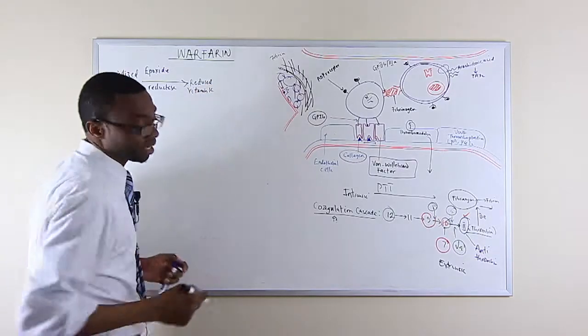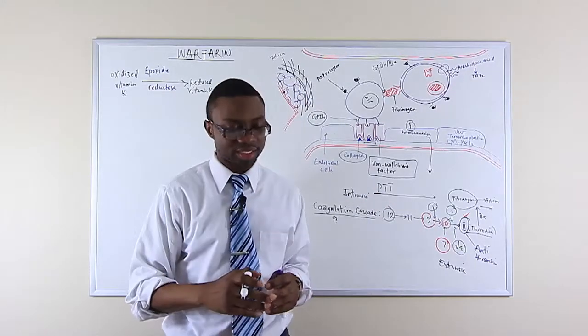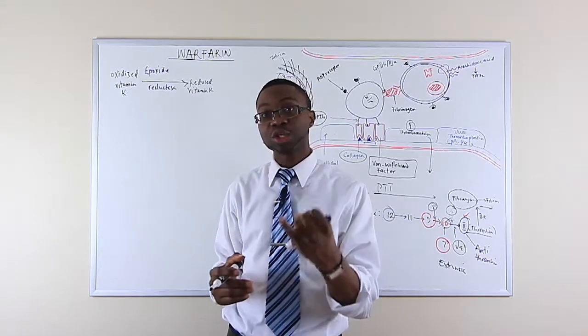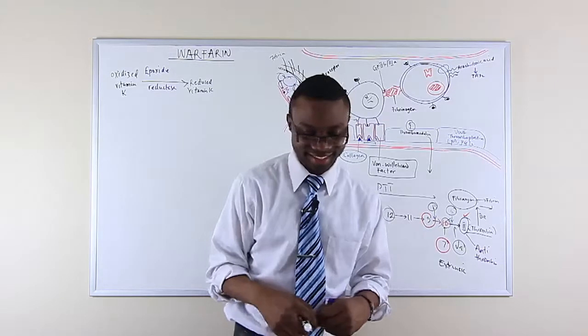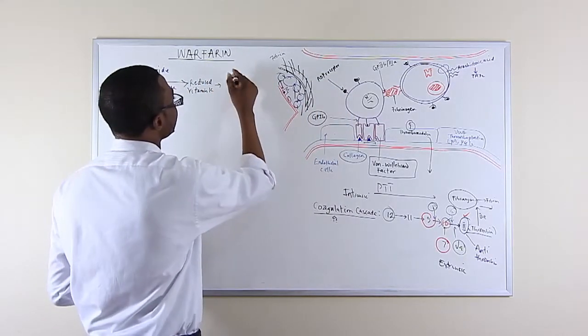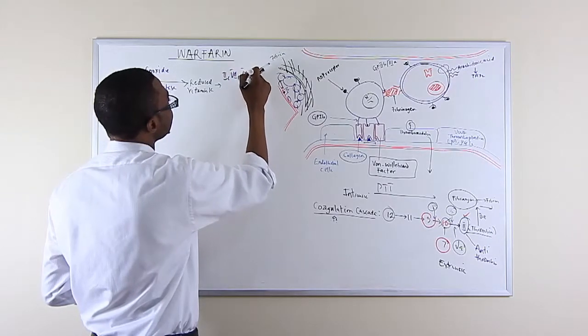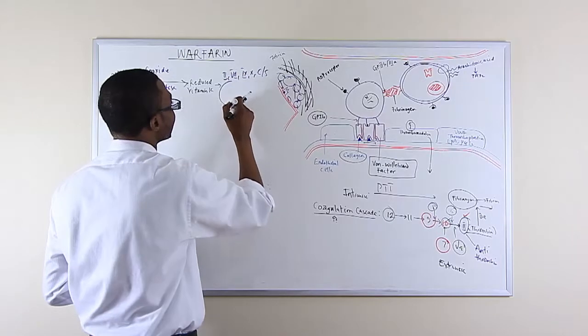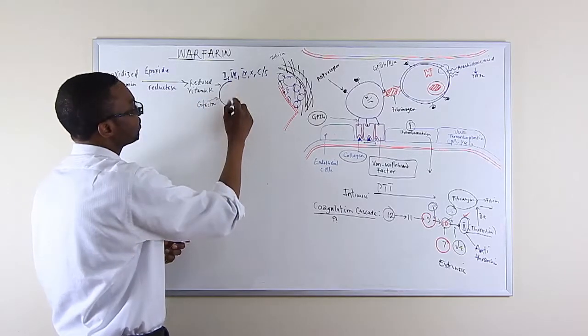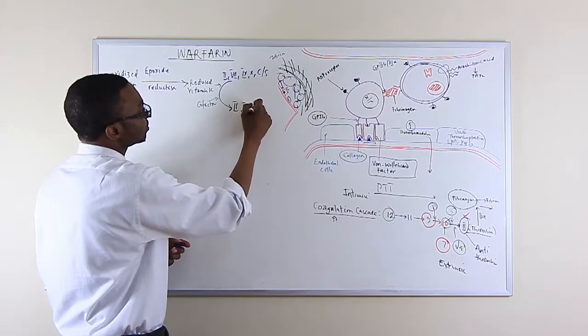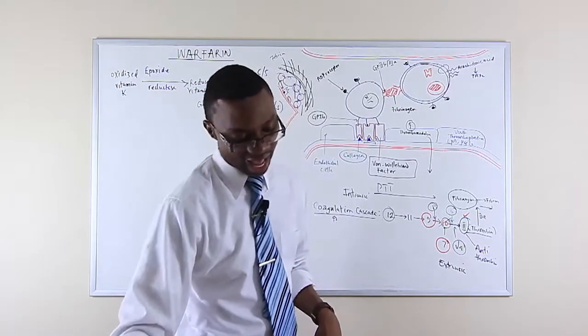This vitamin K is now going to act as a cofactor. It's a cofactor that now takes the precursors of factor 2, factor 7, factor 9, factor 10, and there's more: protein C and S. So we have factor 2, factor 7, 9, 10, factor C and S. And it's going to act as a cofactor and then activate this into their regular cofactors. And that's how those cofactors are actually activated. They become more mature.